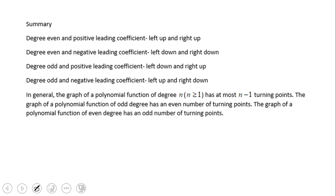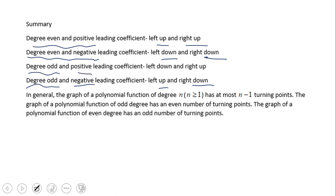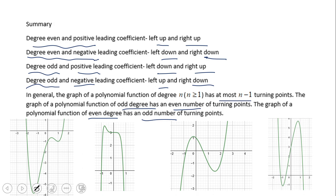Here is a summary of everything we did. When the degree is even and the leading coefficient is positive, we have up-up. Degree even and negative: down-down. When the degree is odd and negative: down-up reversed — left up, right down. Degree odd and positive: down-up. Regarding turning points, the number of turning points is at most n minus one. If the degree is odd, we have an even number of turning points; if the degree is even, an odd number of turning points.